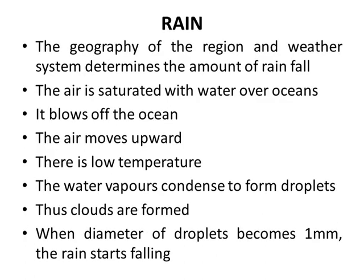The geography of a region and weather system determines the amount of rainfall. The air is saturated with water over oceans. It blows off the ocean and the air moves upward. There is low temperature at higher altitude. The water vapors condense to form droplets. The clouds are formed. When the diameter of droplets becomes 1 mm, then rain starts falling.